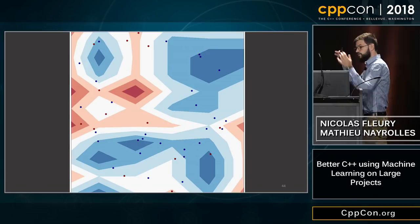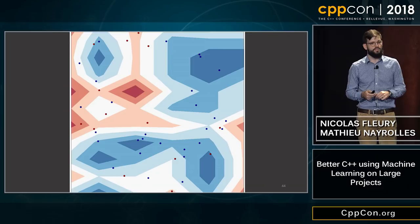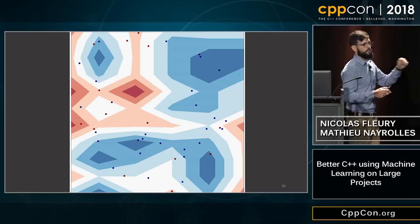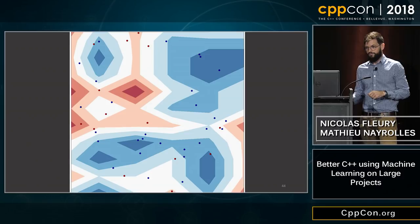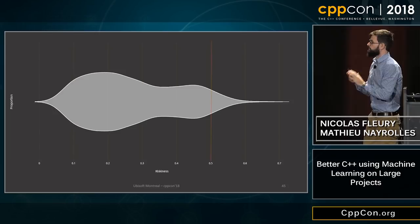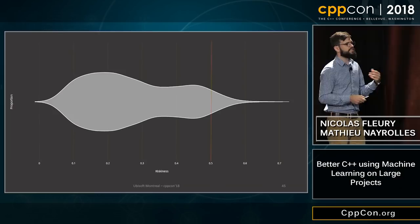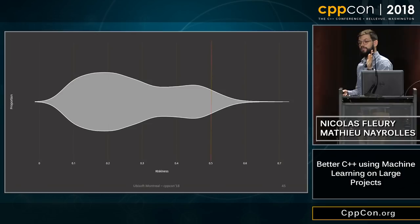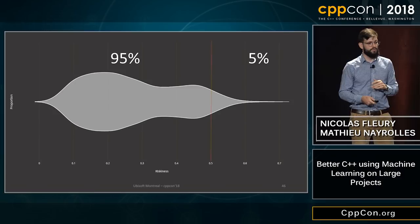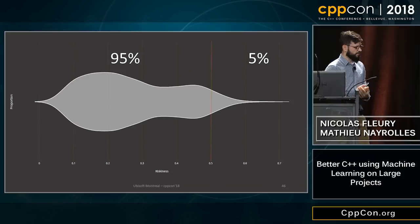Overall we manage 70% precision and 71% recall. With this, you can compute the likelihood of a commit to introduce a bug. Here you can see the distribution of riskiness of commits made on Rainbow Six Siege for the last eight weeks. The median riskiness is 24%, and we decided to look for interesting past bugs and fixes when the riskiness is above 50% — which represents only 5% of the total commits made.